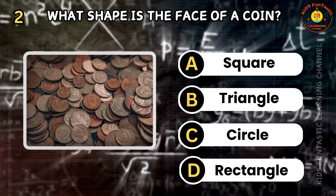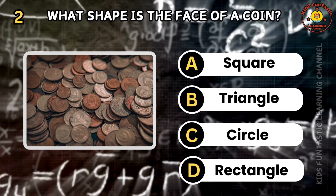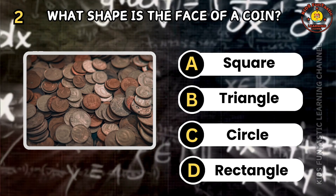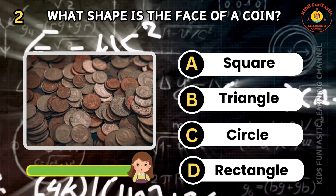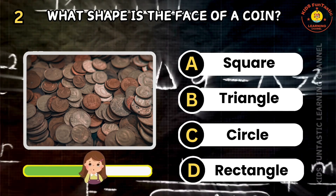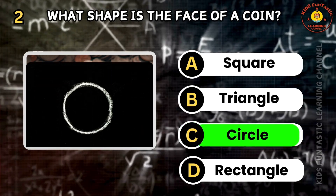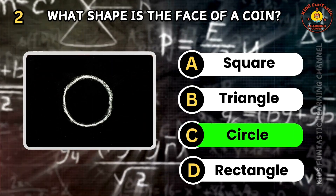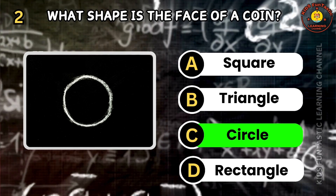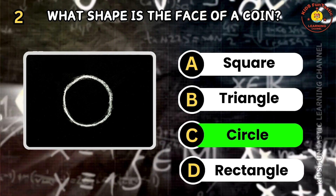Question 2. What shape is the face of a coin? A: square, B: triangle, C: circle, D: rectangle. Awesome job! The correct answer is C. The face of a coin is a circle.